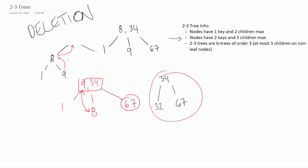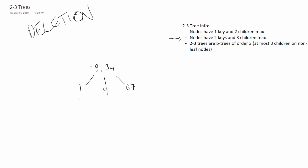Alright, last one. If I delete 8, I'm left with something invalid. What it should look like is 34 as the single root, with 1 and 9 joining together as the left child — both are less than 34 — and 67 as the right child, since it's the biggest. So we only have two children, which is correct for a single-key root.